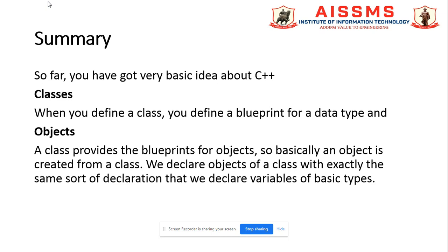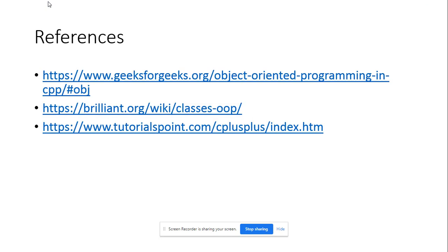What we have studied in this lecture: we have got very basic idea about C++ classes and objects. When you define a class, you define a blueprint for a data type. And when we discuss objects, a class provides the blueprints for objects. So basically an object is created from a class. We declare objects of a class with exactly the same sort of declaration that we declare variables of basic types. So in objects, there are various variables we use to store the values.